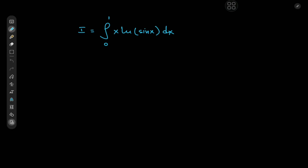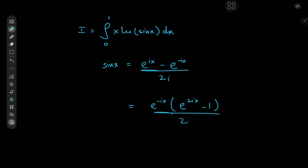So now that the integral is sufficiently hyped up, how exactly do we begin with the solution development? Well, we have sine x and the sine function has a really cool definition in the complex realm. In complex analysis we define sine x as (e^(ix) − e^(−ix)) / (2i), which is of course very cool. If we factor out e^(−ix), we get (e^(2ix) − 1) / (2i).